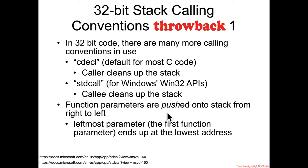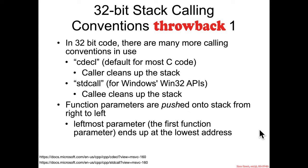As I already alluded to, function parameters are pushed onto the stack from right to left — pushed right to left so that ultimately when you look at the stack from bottom to top, the bottom entry is the leftmost parameter and the rightmost parameter is on top at the higher address.